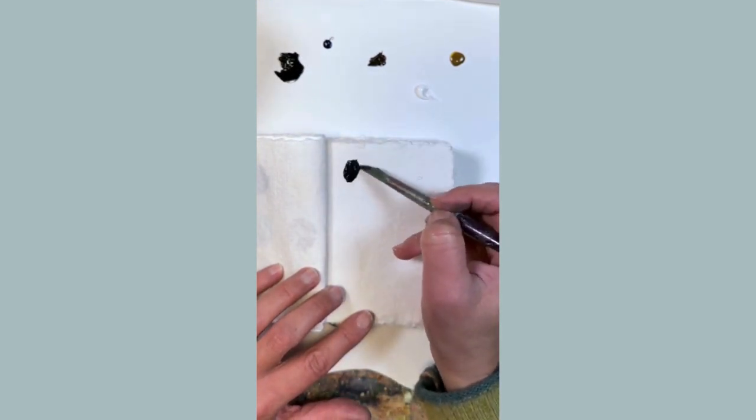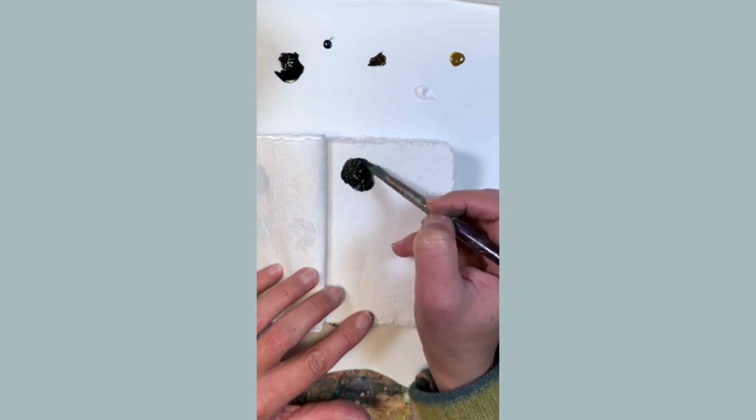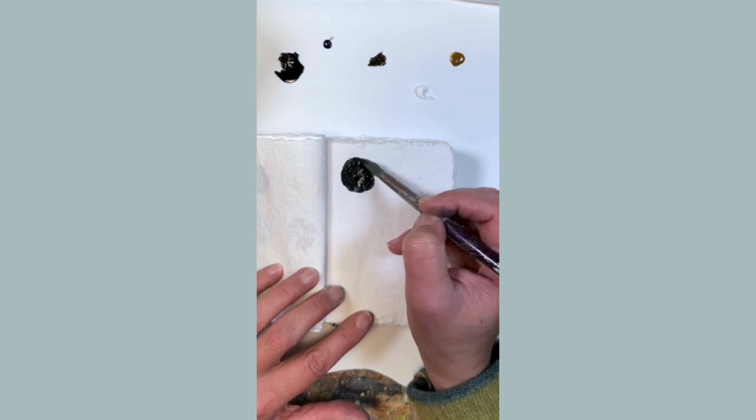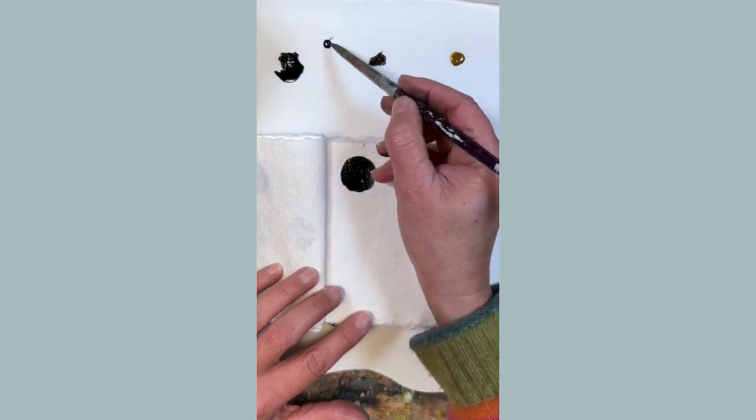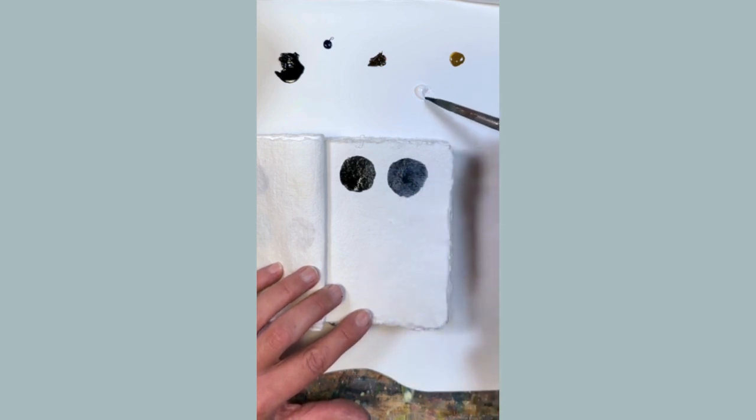And the colors have the white in to make it more muted, to make it into a pastel, apart from the slate grey, which is pretty much Payne's Grey used by itself to create that slate grey.